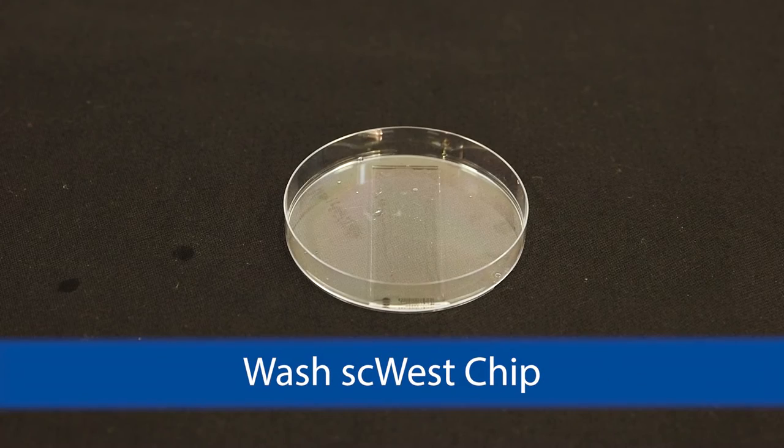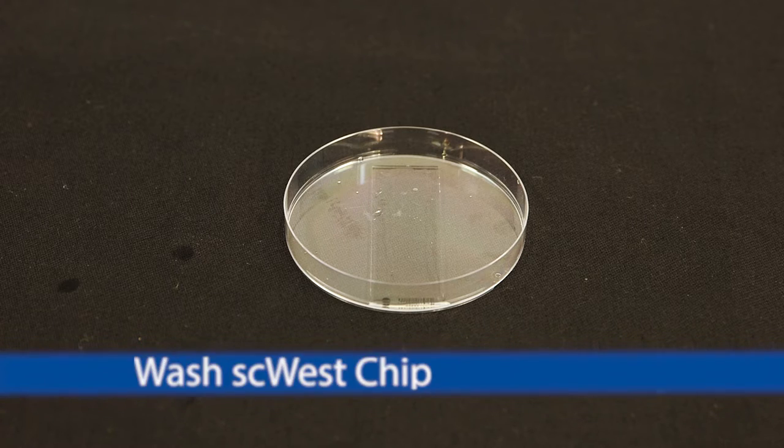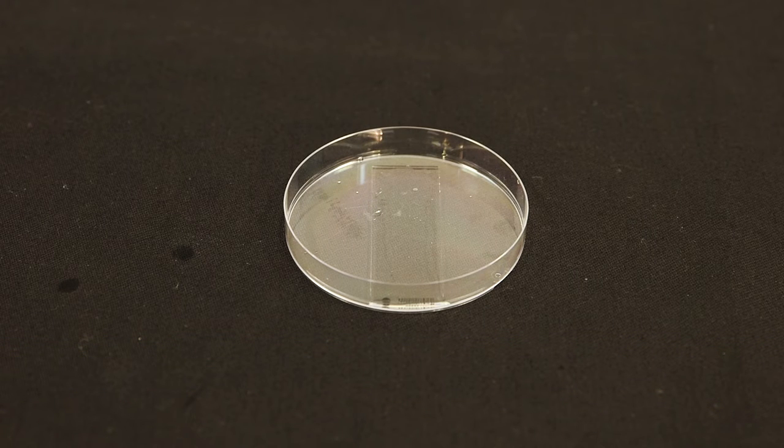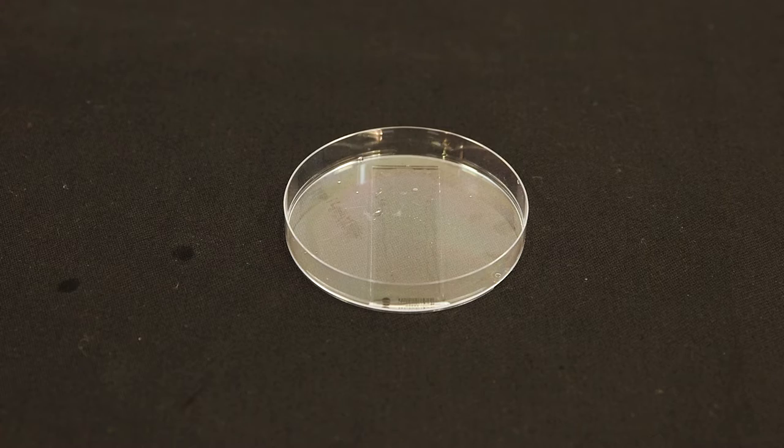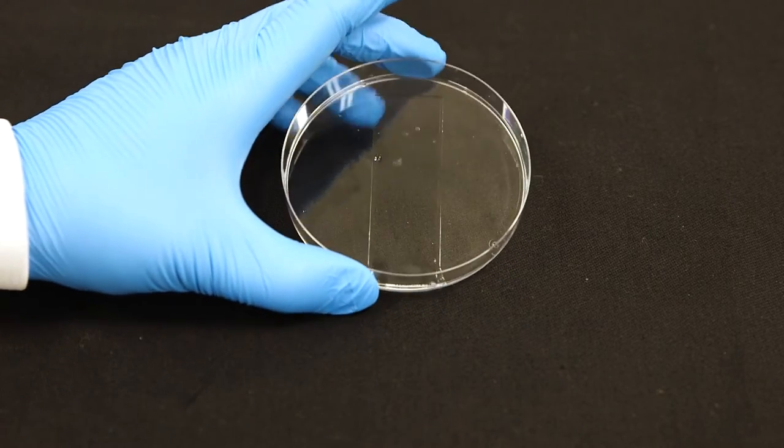After your cells have settled on the SC-West chip for 5 to 15 minutes, tilt the Petri dish at a 45 degree angle and aspirate off the cell suspension.